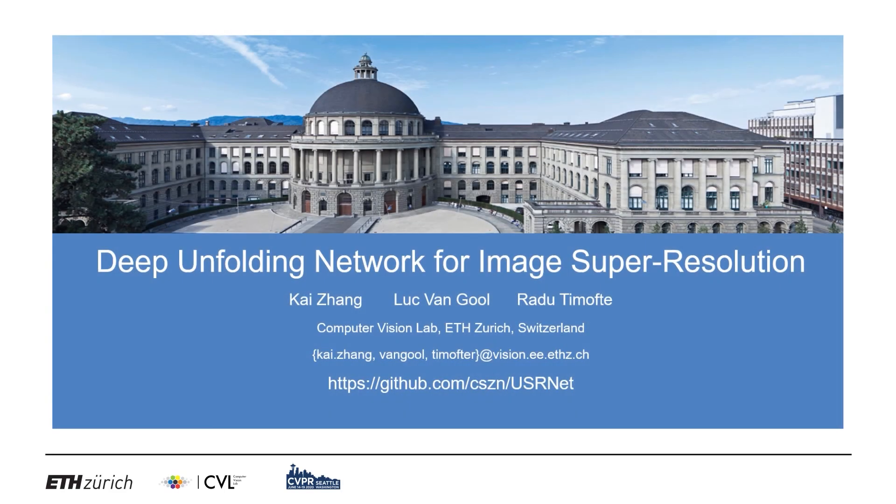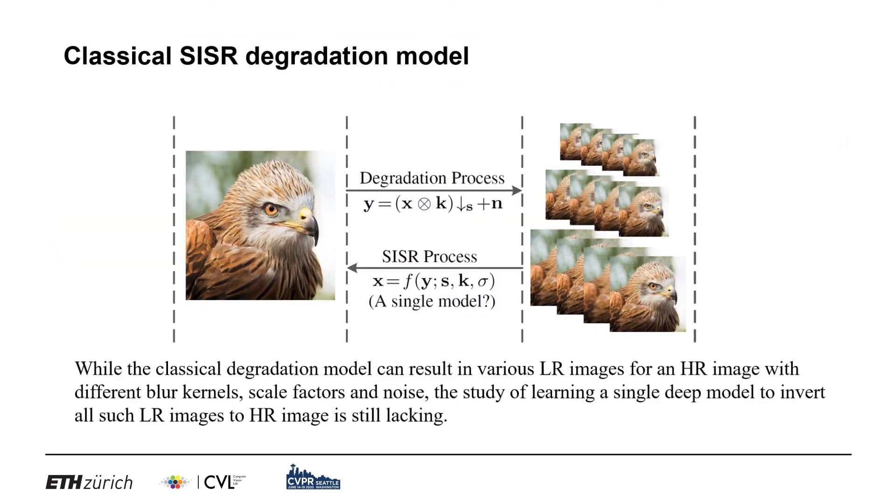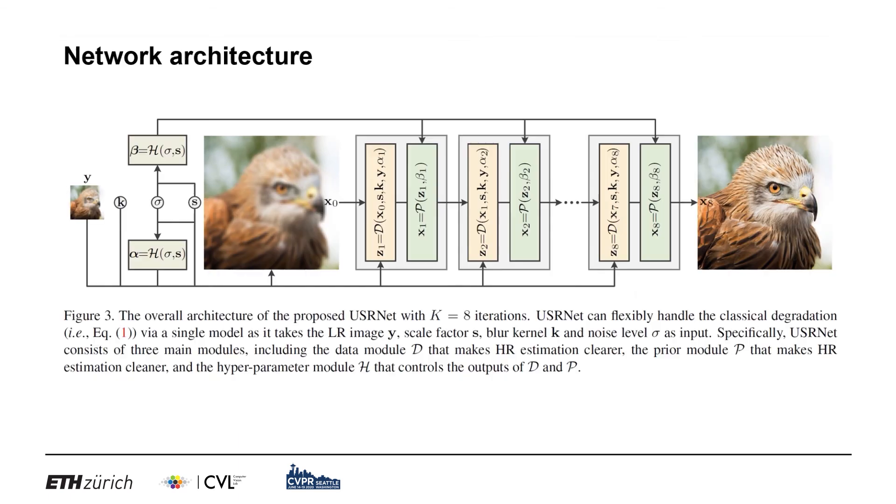This paper proposed an end-to-end deep network which leverages both learning-based methods and model-based methods. The motivation is that the study of learning a single deep model for classical degradation model is still lacking. Inspired by half-quadratic splitting algorithm, the proposed USRNet can handle classical degradation with a single model as it takes the scale factor, blur kernel, and noise level as input.